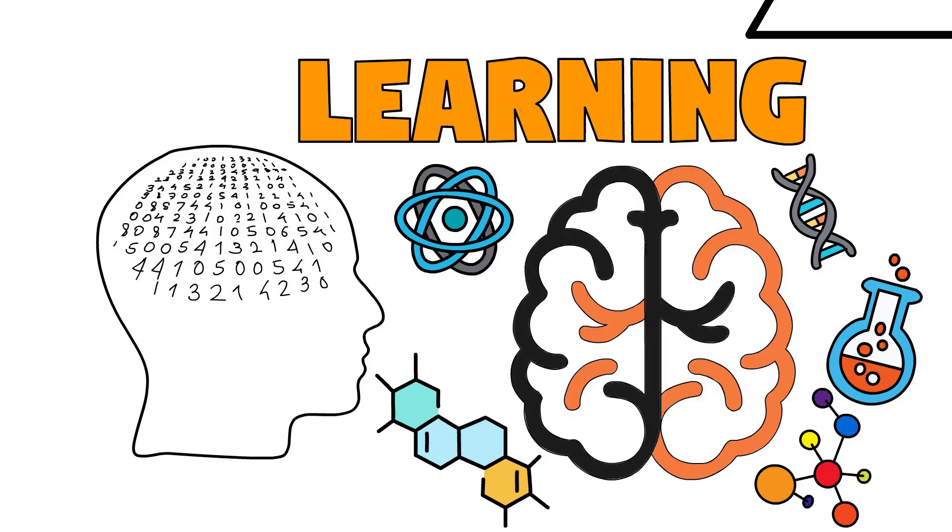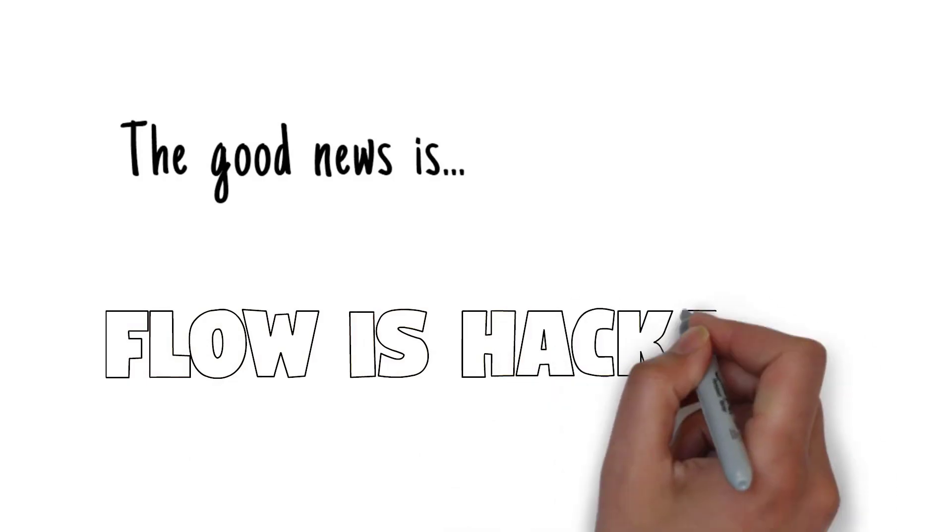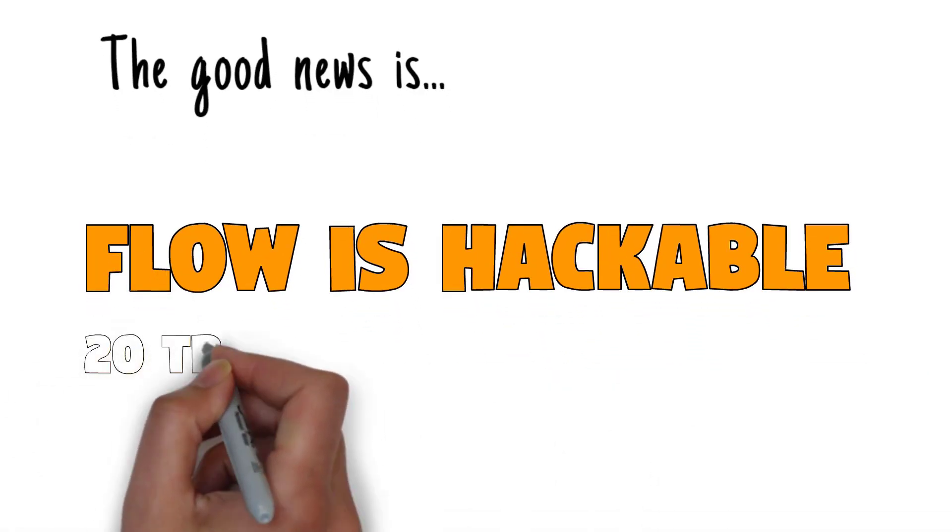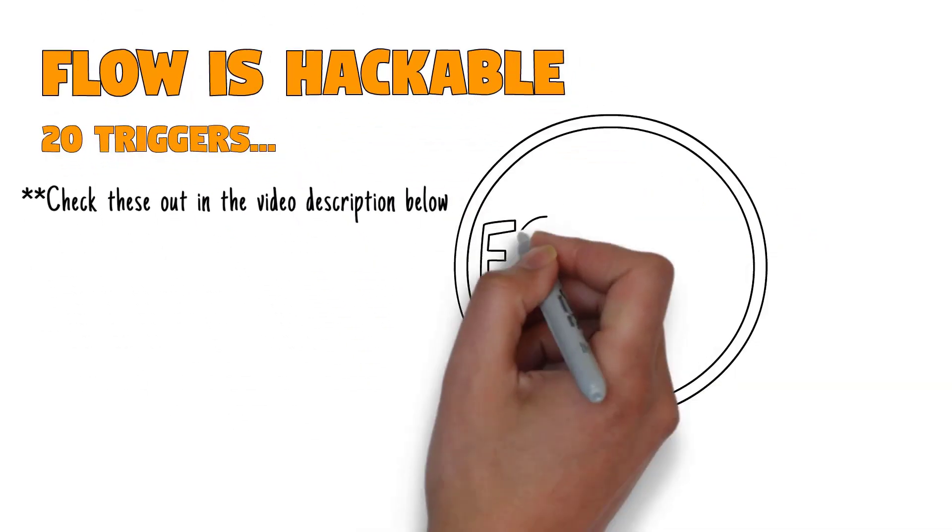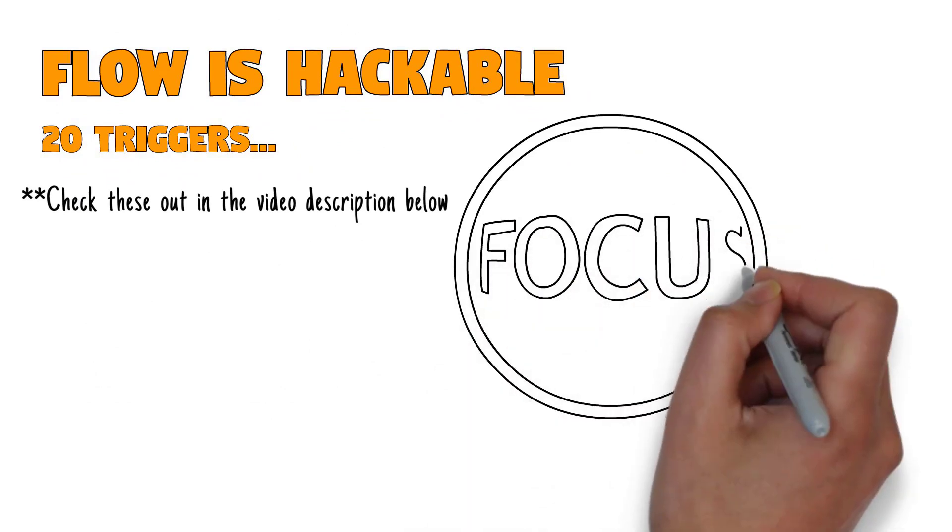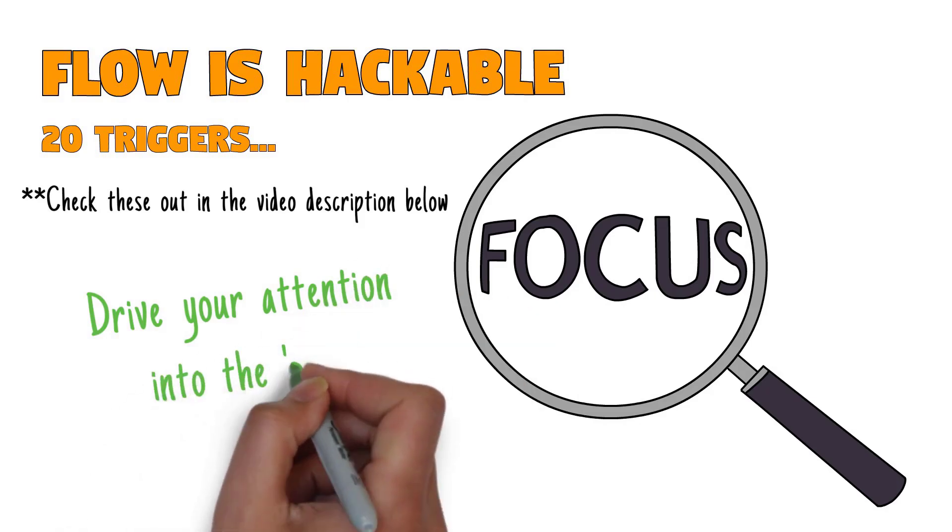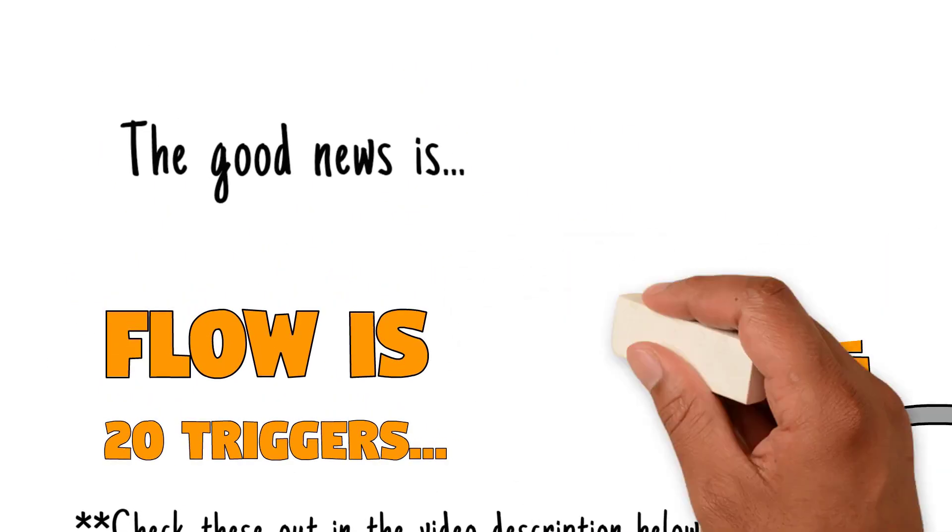Now the really good news is that what we now know is that flow states are hackable. What we have discovered is that flow states have triggers—these are preconditions that lead to more flow. There are 20 of them in total, but the first thing you need to know is the most obvious: flow follows focus. It can only show up when all of our attention is focused in the right here, right now. That's what most of these triggers do—they drive attention into the now. It turns out flow is eminently trainable.